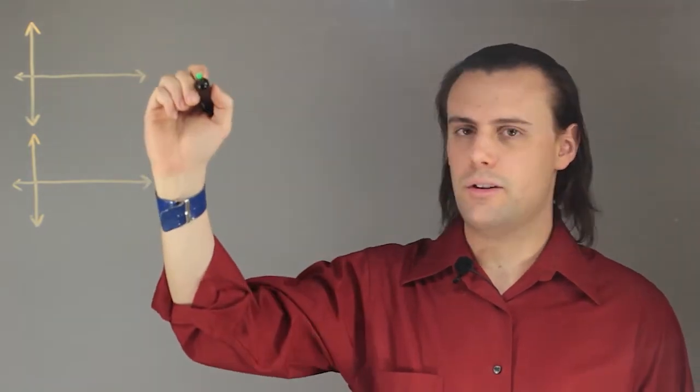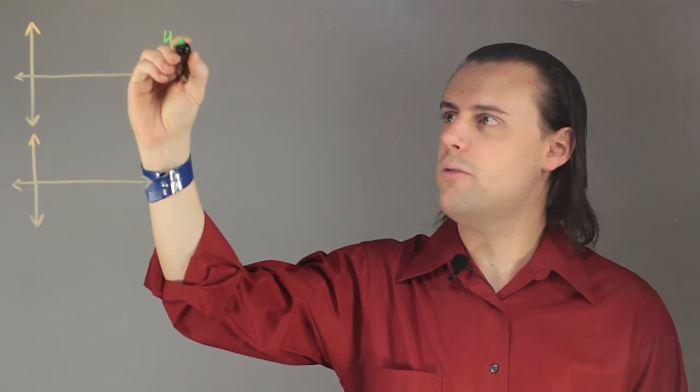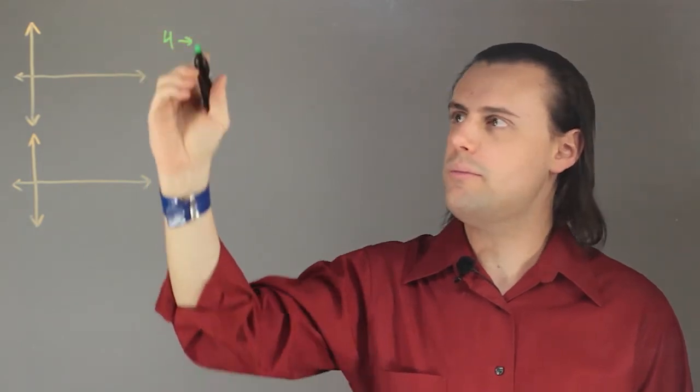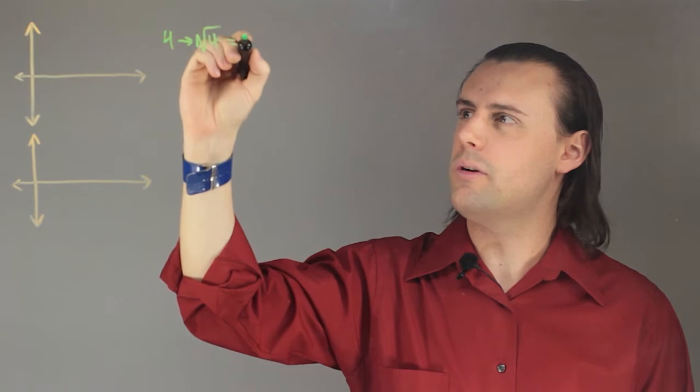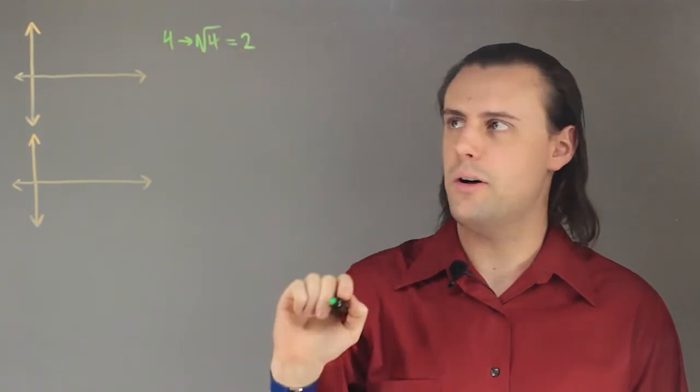If we consider a positive number, such as 4, and we take the square root, we get a positive number. In this case, just positive 2.